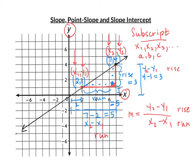Common errors: students sometimes put the x on top — keep in mind it's rise over run, y must go on top otherwise it's wrong. Another mistake is thinking y2 and x2 mean the 'second point' — they don't, they're just different points than x1, y1. The order you choose the points doesn't matter, but what is important is that you start with the same point above and below.